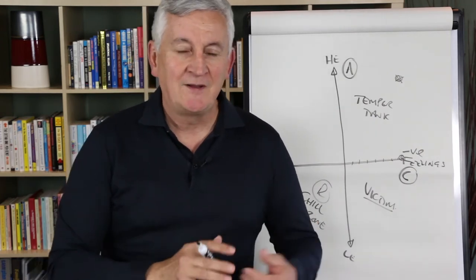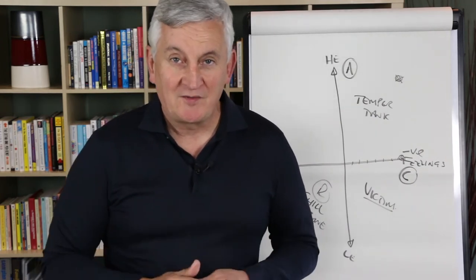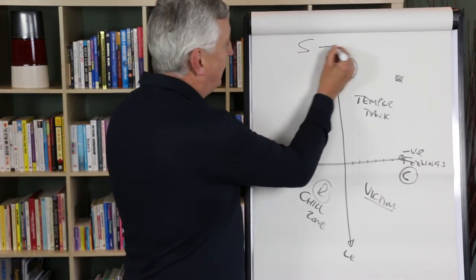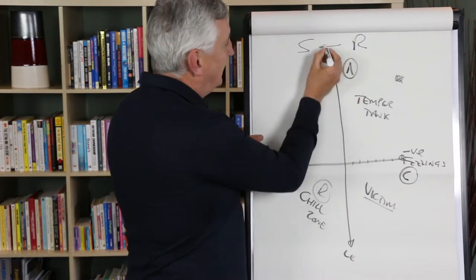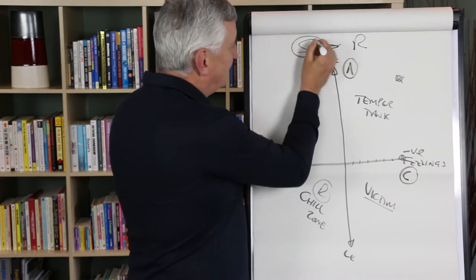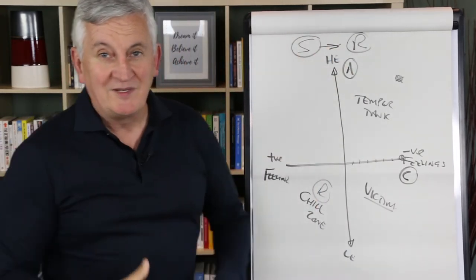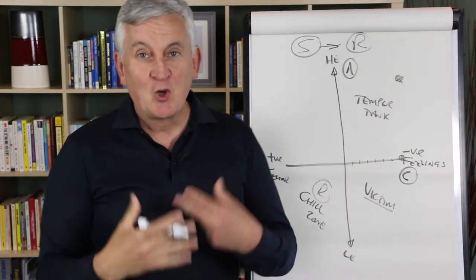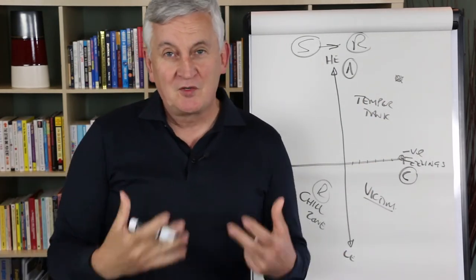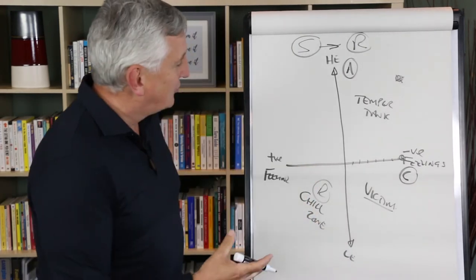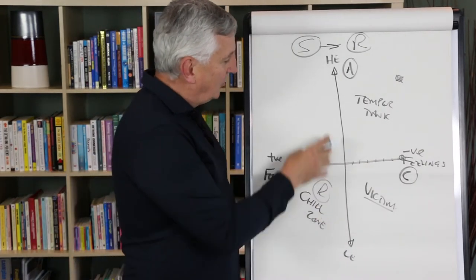Now what happens, the dangerous part of this is that when we think about the stimulus and response situation, this response to this stimulus can start to be normal. We think living over here is a normal thing to do which of course is not good because we're full of bad chemistry. Of course what we want to do is get over to the chill zone or what we call the peak zone over here.